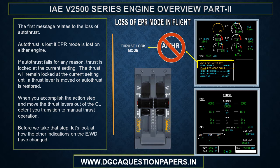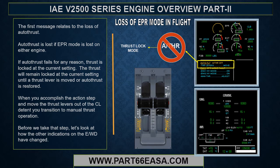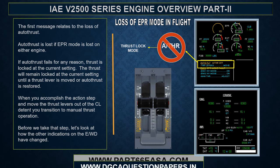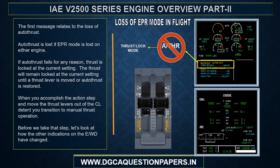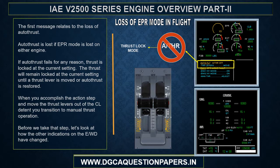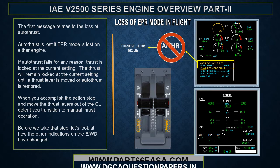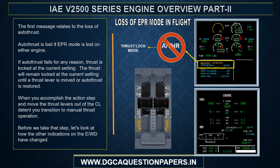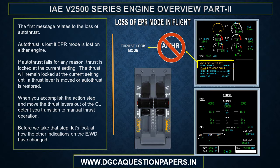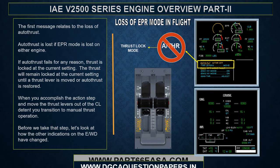If autothrust fails for any reason, thrust is locked at the current setting. The thrust will remain locked until a thrust lever is moved or autothrust is restored. When you accomplish the action step and move the thrust levers out of the climb detent, you transition to manual thrust operation.